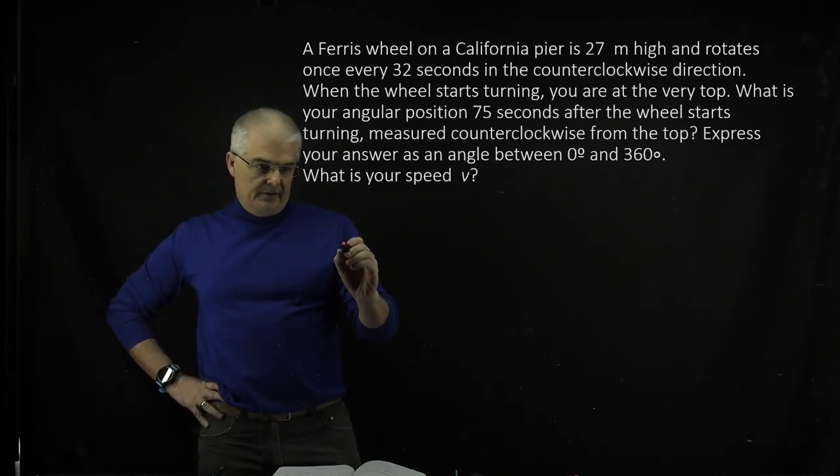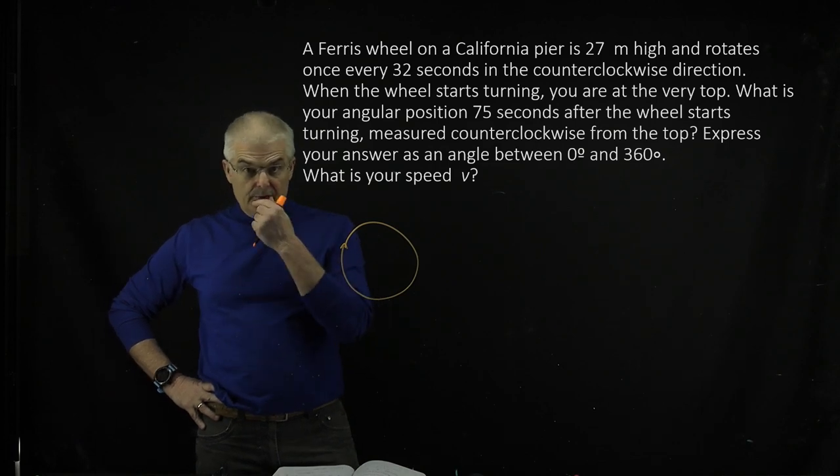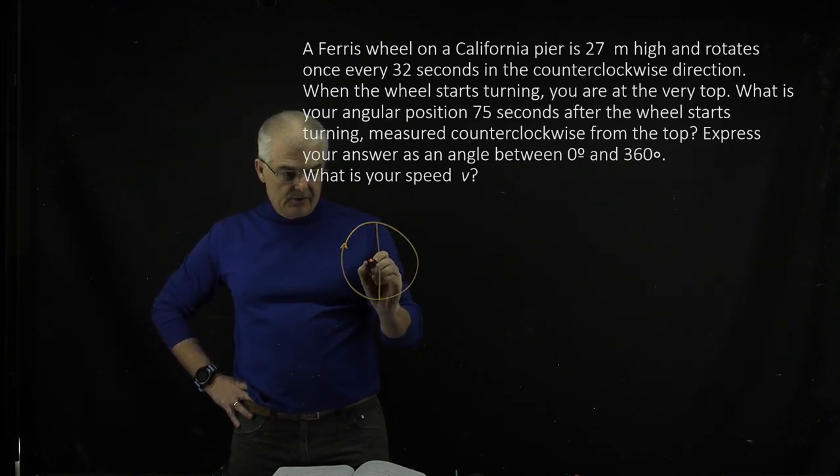So we've got the Ferris wheel moving in a circular motion. What do we know? We know that it's 27 meters high, so that's the diameter, 27 meters.